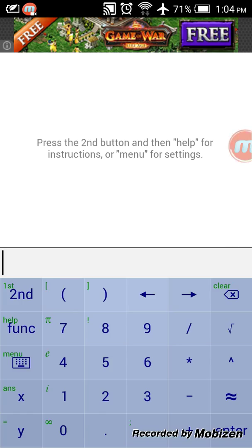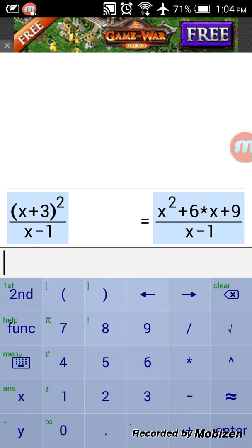We can have an example: (x+3)² over x-1, enter. And if you can see, it puts the upper, (x+3)² and makes it into the simple form.